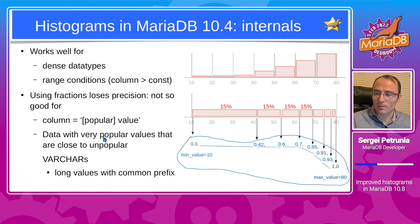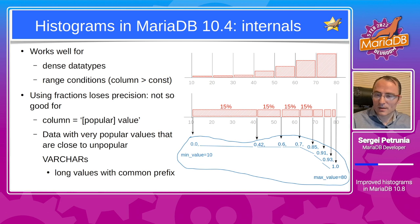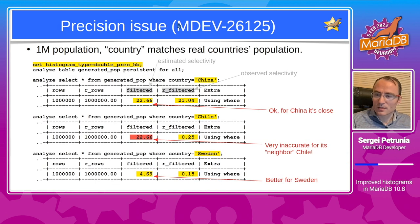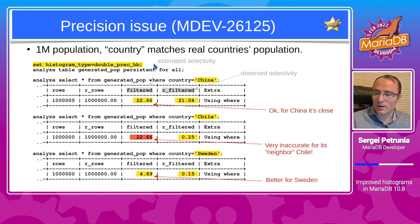This is particularly problematic for very popular values located next to unpopular values, and for varchar columns with long values and common prefixes like URLs. One test case filed as bug MDEV-26125 uses a dataset of one million rows with a country column, where the population of each country represents real-world country population — each person in the world has an equal chance of being represented in this one-million-row population.